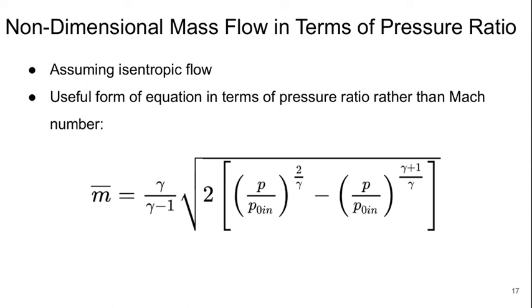And so we can write that the M bar is going to be just this function of P over P naught in. So the inlet total pressure and the static pressure at whatever point we want to calculate the non-dimensional mass flow per unit area. This will turn out to be quite useful later on.